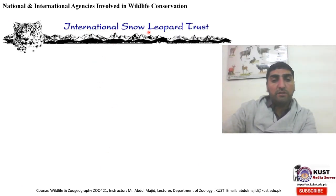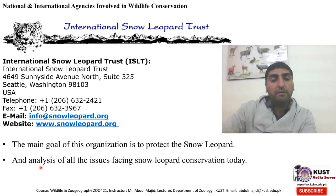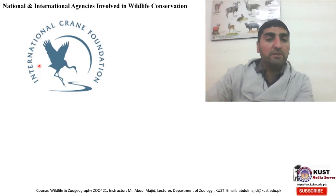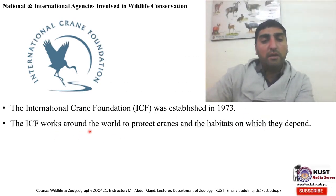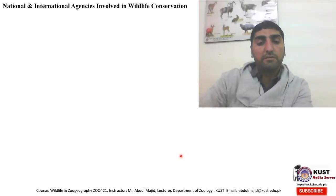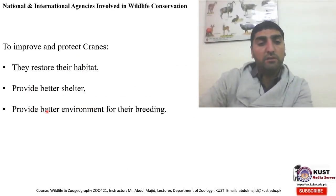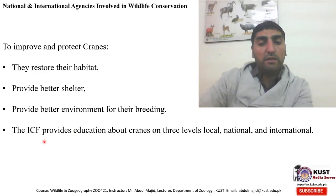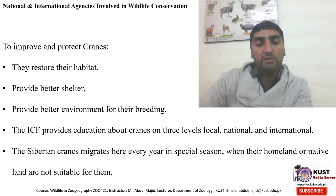Another is the International Snow Leopard Trust, whose main goal is to protect the snow leopard and analyze all issues facing snow leopard conservation. The International Crane Foundation (ICF) was established in 1973 and works around the world to protect cranes and the habitats on which they depend — restoring their habitats, providing better shelter and environment for their breeding. The ICF provides education about cranes at three levels: local, national, and international. The Siberian crane migrates to Pakistan every year in a special season when their native land is not suitable.